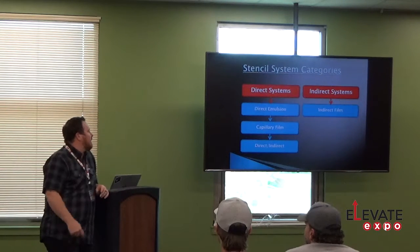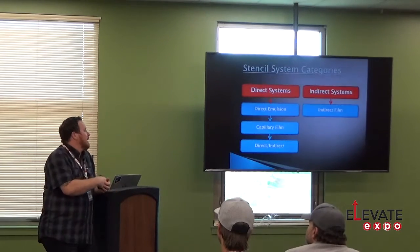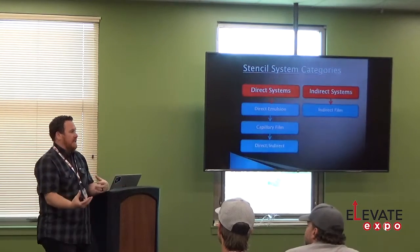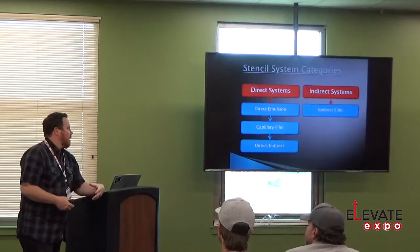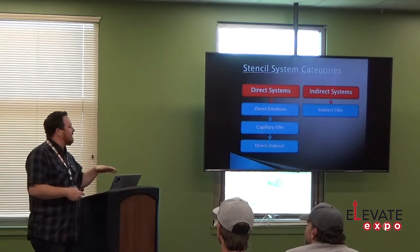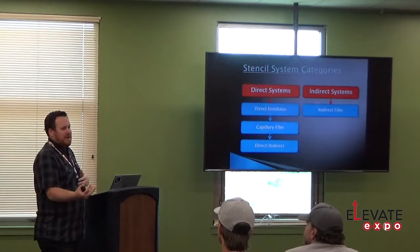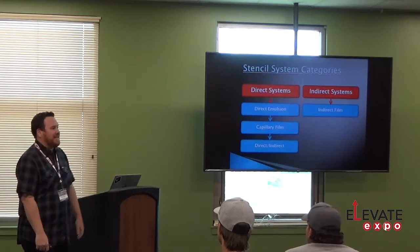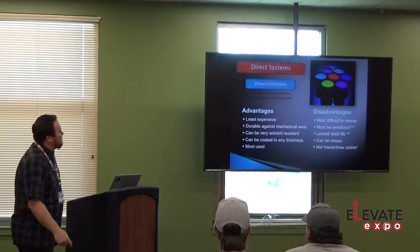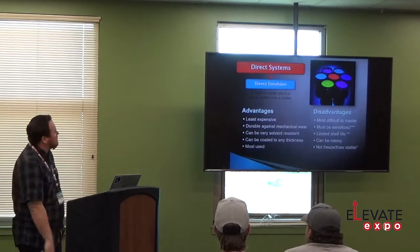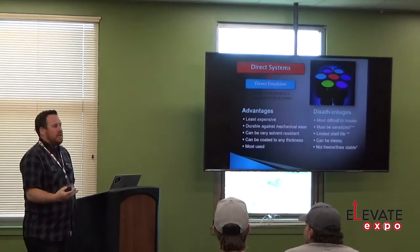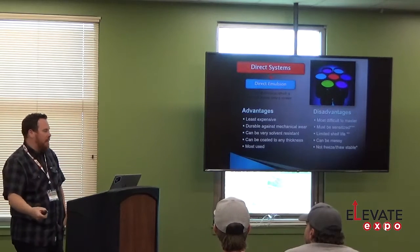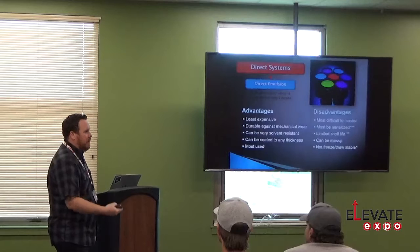Direct systems are what we'll primarily be talking about. Direct emulsion is the liquid emulsion coated on the screen. Capillary film and direct-indirect are the other types — that's the combination of direct emulsion and capillary film together. It's a poor naming system; it's really not using indirect film, it's a direct capillary film with direct emulsion, so it should be called 'direct-direct,' but it's called 'direct-indirect.'